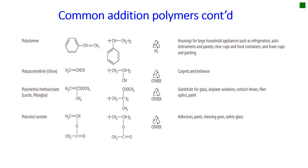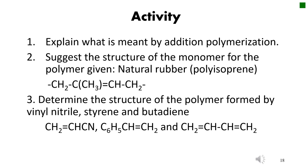Let's look at some evaluation questions concerning addition polymerization. The first one is to explain the concept of addition polymerization. The second one: when given the structure of the polymer, suggest the structure of the monomer that produced it. Number three is the opposite: when given the structure of the monomers, write the correct structure of the polymer which may result from those monomers. Thank you.